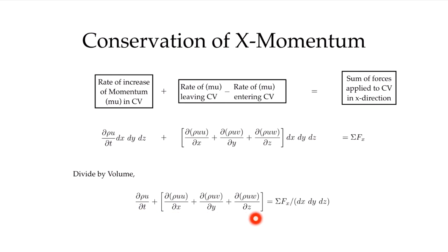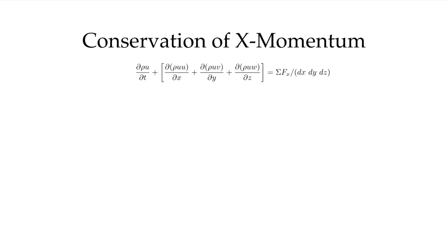Dividing by the volume, I'm left with one term representing the rate of change of momentum per unit volume in the control volume, another term for the net rate at which momentum is carried out minus in per unit volume, and on the other side the sum of forces applied to the control volume per unit volume. That's my equation, and now we need some calculus to simplify it.